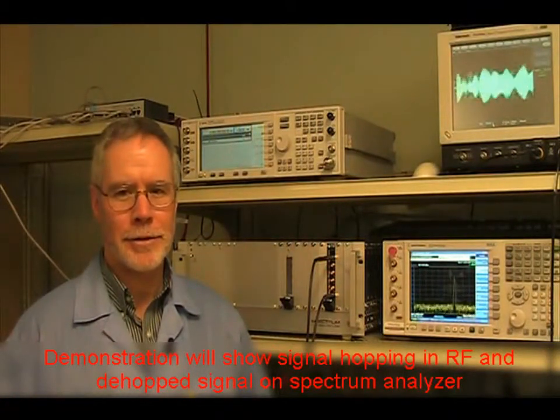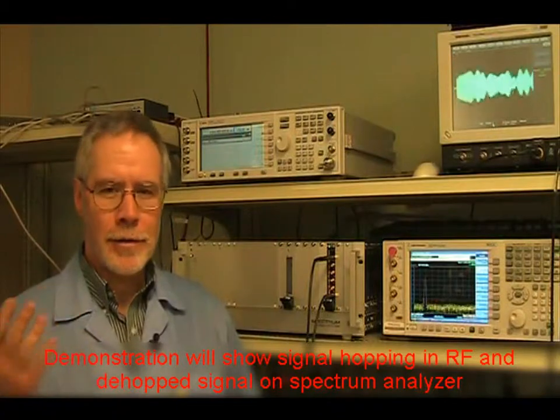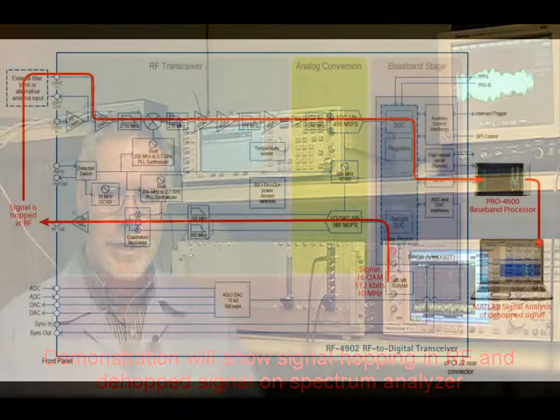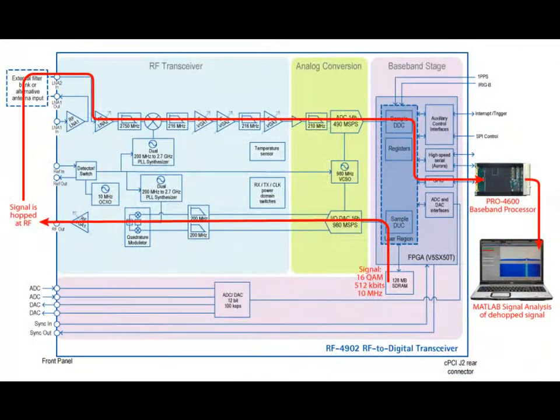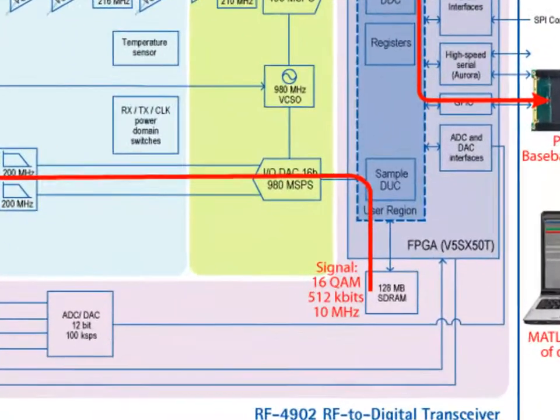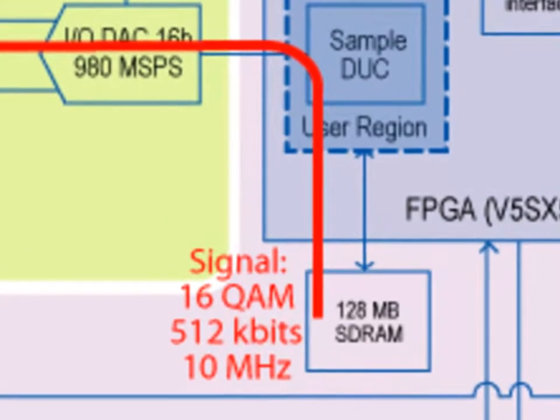we'll show it operating at 10 hops per second so you can see it more easily on the spectrum analyzer screen. We'll take that signal, route it back into the receiver, and run a spectrum analysis on the received and de-hopped signal generated from the SDRAM onboard the RF4902. The signal itself is modulated with 512 kilobits per second of data. You can handle much wider bandwidths, but we'll restrict the bandwidth here to 200 kilohertz. This can easily go much wider when you have the bandwidth available.